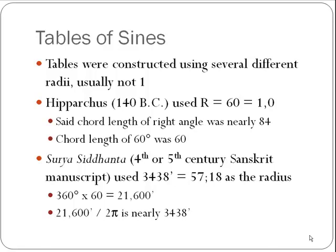The chord length for a 60-degree angle was 60, or equal to the radius. A Sanskrit manuscript, Surya Siddhanta, which came about in the 4th or 5th century, used a strange radius of 3,438 minutes — or 57 degrees and 18 minutes — as the radius of the circle. They might have gotten that as an early approximation to radians. If we take 360 degrees, the full revolution, and multiply it by 60, we get 21,600 minutes. Dividing that by 2π, or the circumference of the circle, gives nearly this number of 3,438.